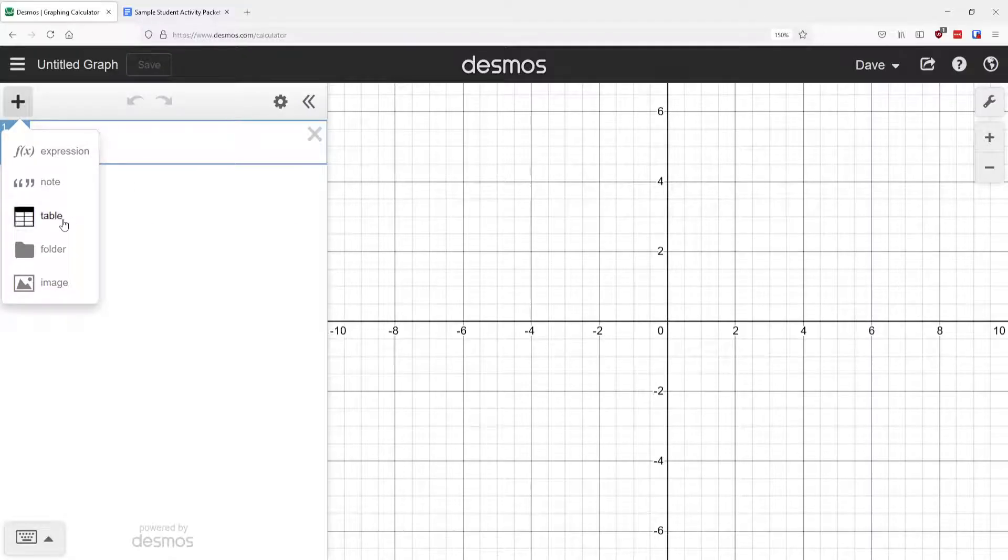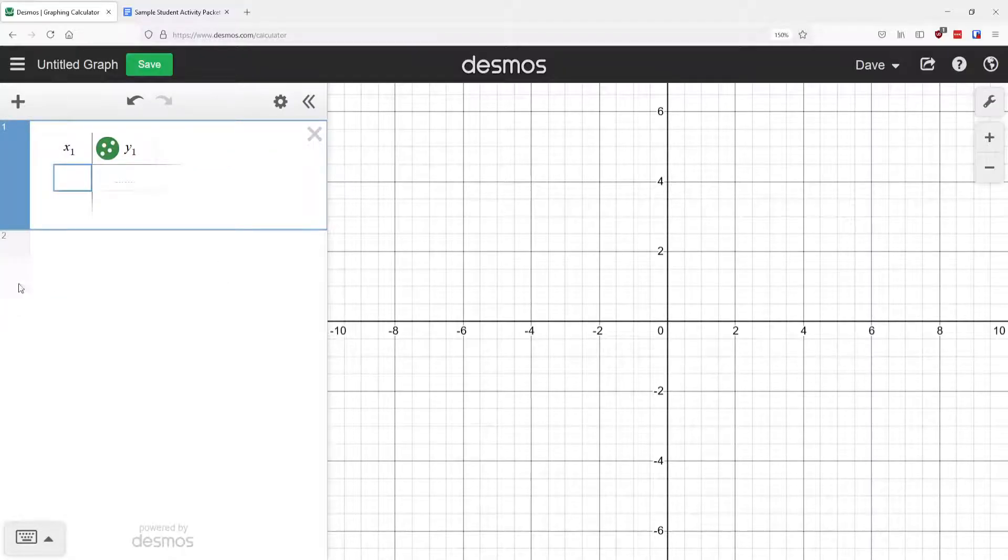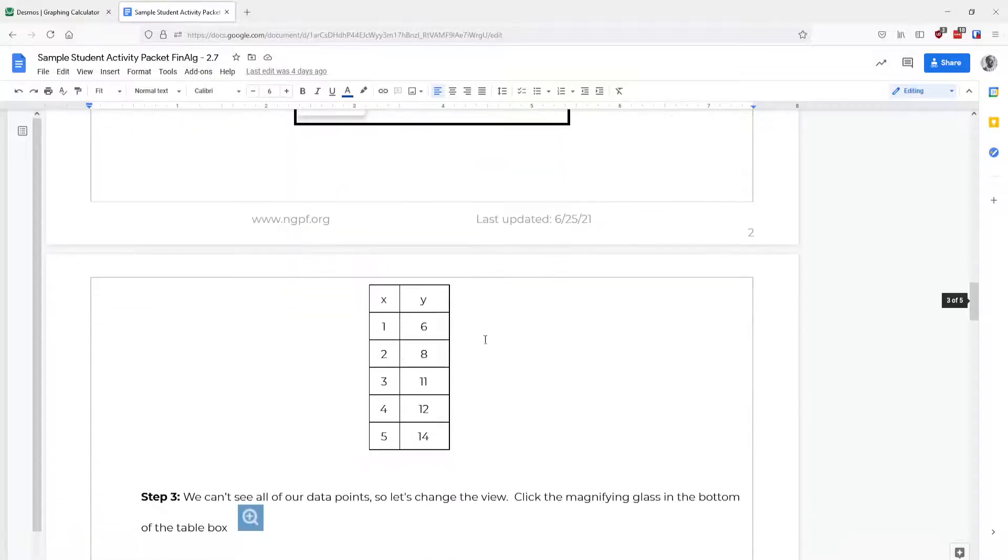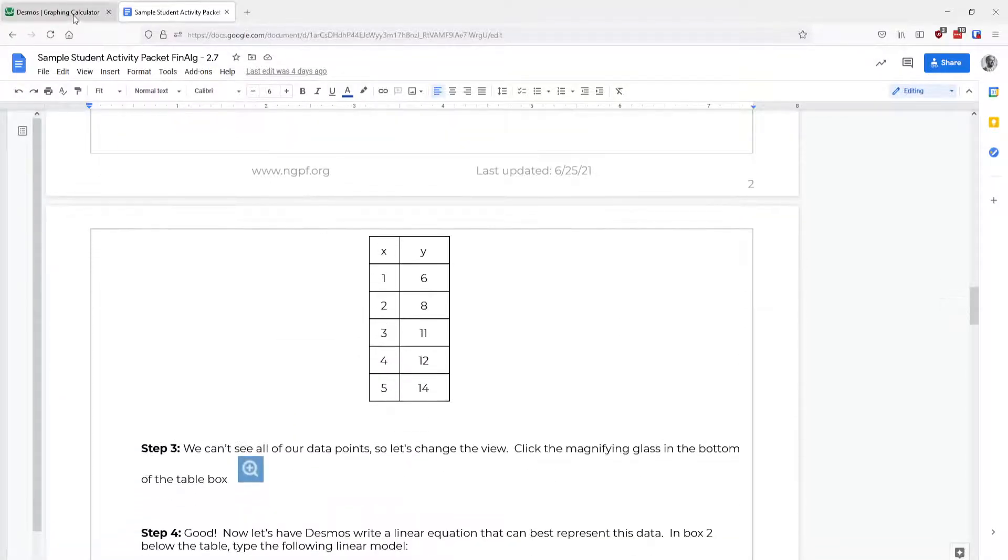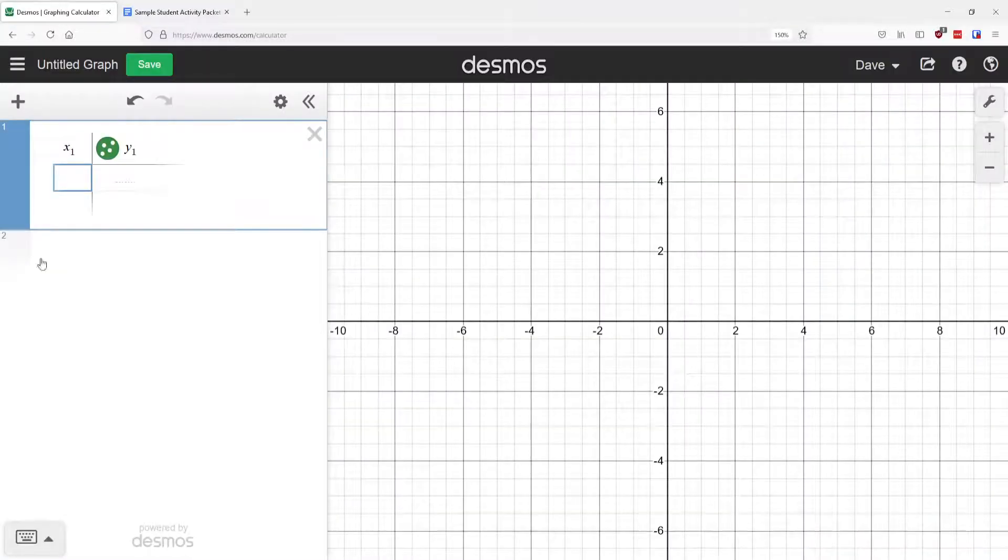And the one that we're going to add specifically is a table. And then we're going to put all of the information in your student activity packet that is below the screenshot here. And we're going to put that into our graphing calculator or graphing table.